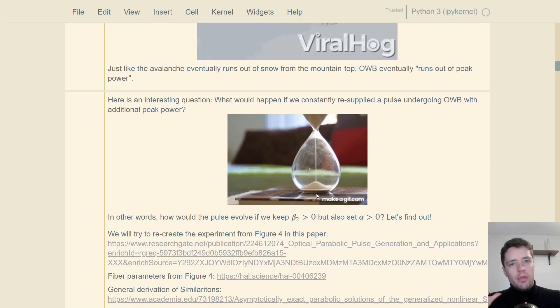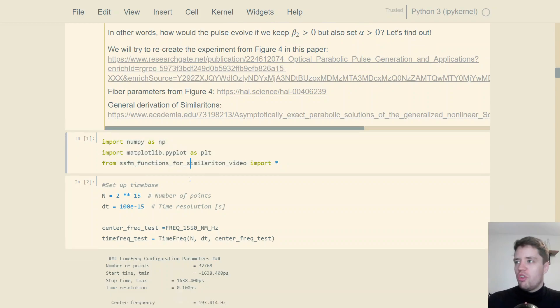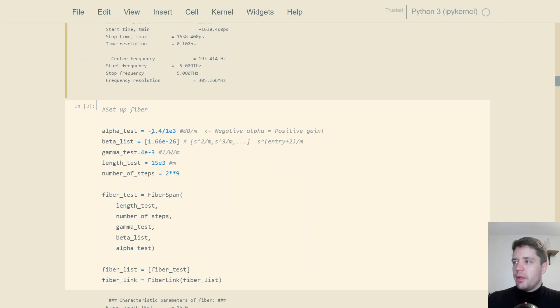So essentially that's what's happening when we create these similaritons. We simply have a beta-2 value that's positive and a gain value that's also positive. So the pulse does spread out, but we keep adding more material on top of it, or more light in this case. So let's actually take a look and try and simulate that. So here I've imported my usual library for doing the split-step Fourier method solution to the nonlinear Schrödinger equation. Then I've set up a time base with a certain resolution and a certain number of points. Next I've defined a fiber here with a negative attenuation coefficient, so that means we have positive gain.